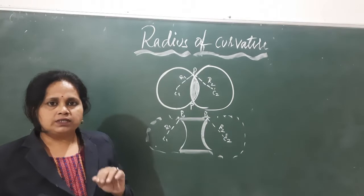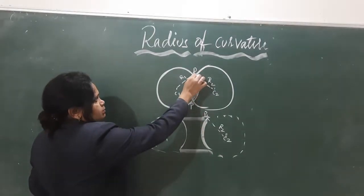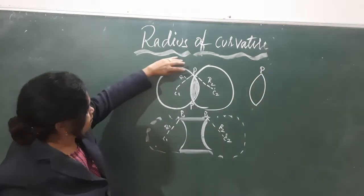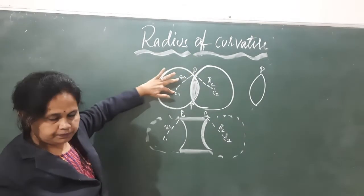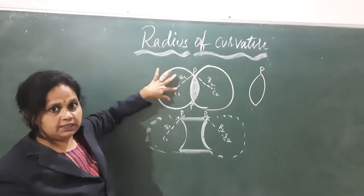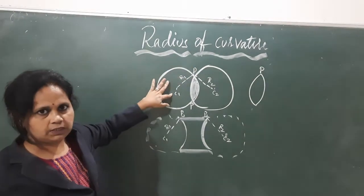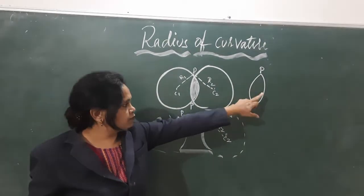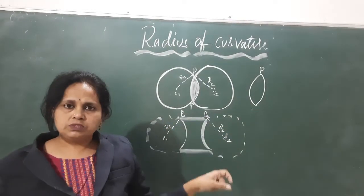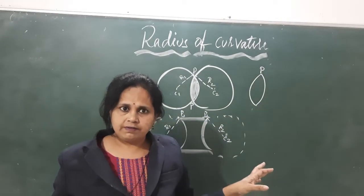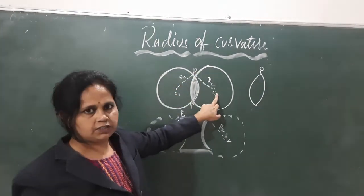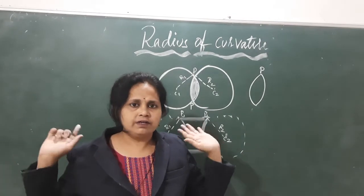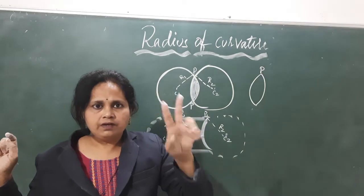Now we will understand what is radius of curvature. Let us consider point P. From point P to center of curvature 1, the distance is itself nothing but the radius of curvature. As we know, a convex lens has two surfaces, so there will be two centers of curvature. The distance from point P to C1 and from point P to C2 is the radius of curvature.